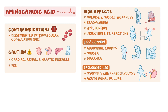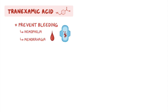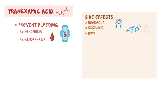The next antifibrinolytic is tranexamic acid, which can be used to stop or prevent bleeding in clients with hemophilia, as well as in clients with menorrhagia or heavy menstrual bleeding. Side effects of tranexamic acid include headache, seizures, impaired color vision, as well as abdominal pain, nausea, and diarrhea.